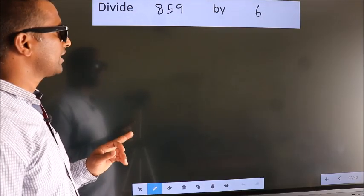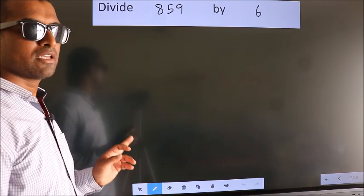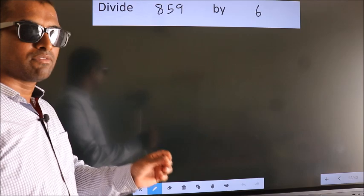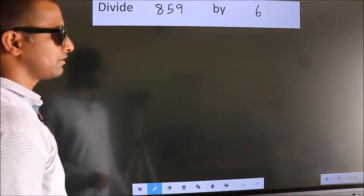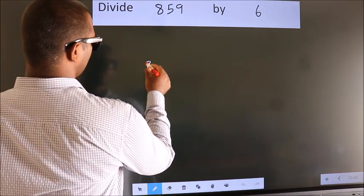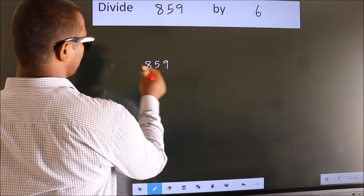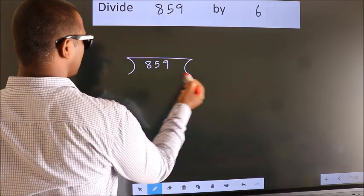Divide 859 by 6. To do this division, we should frame it in this way. 859 here, 6 here.